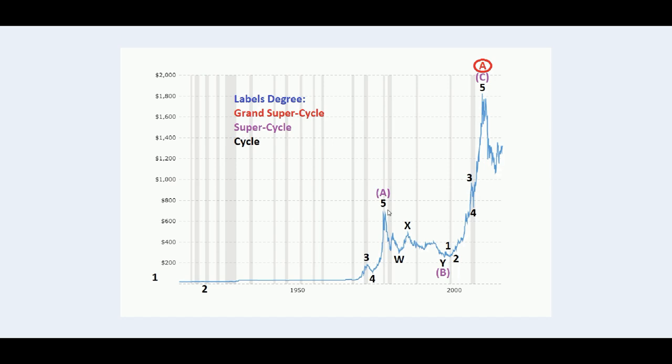Now, the reason why I'm labeling this chart as an ABC within a grand supercycle A and not as a one, two, three, four, five is because this corrective pattern is first of all a complex W-X-ABC-Y, right here completing supercycle B. The reason why I'm labeling this as a B and not as a two is actually because timewise it took way too long for this to be considered as a second wave.